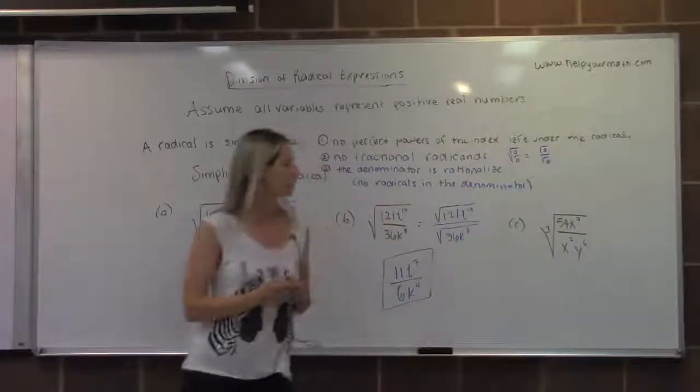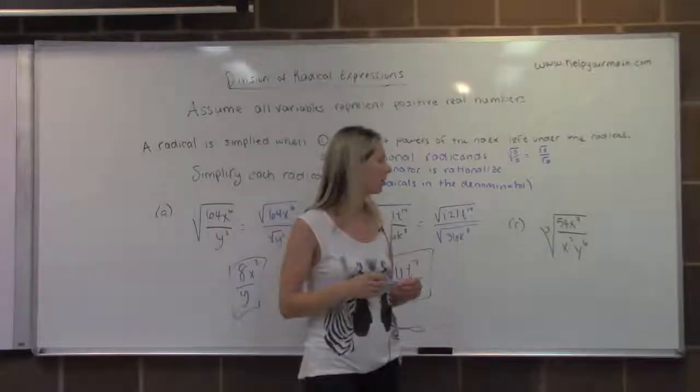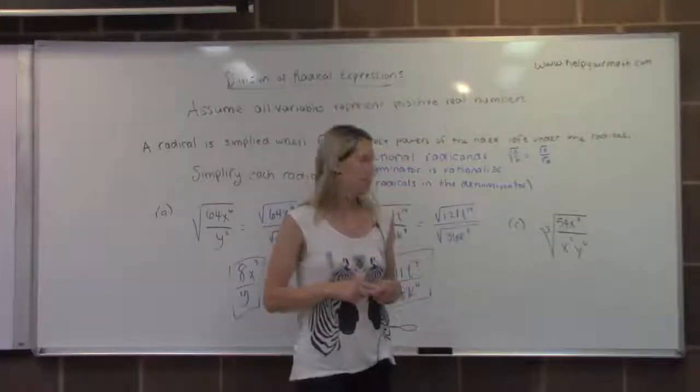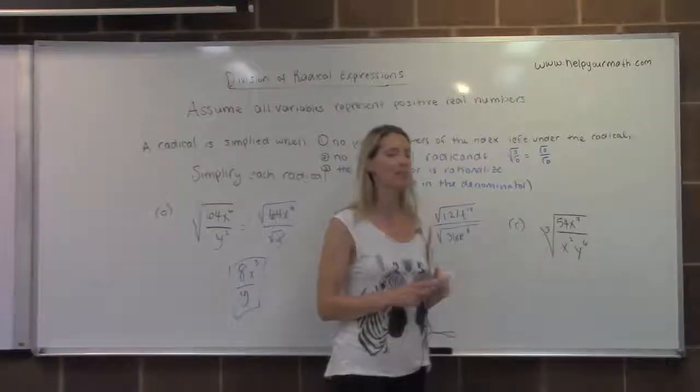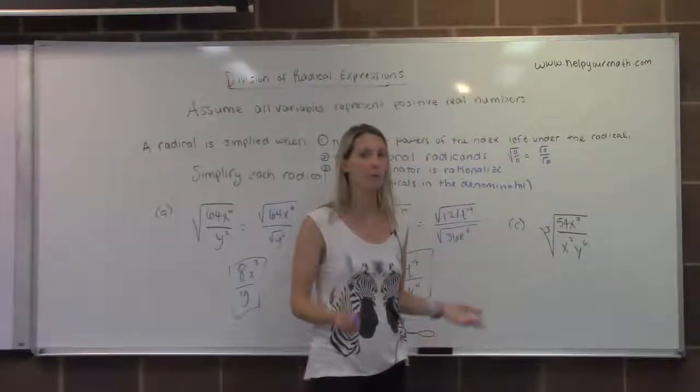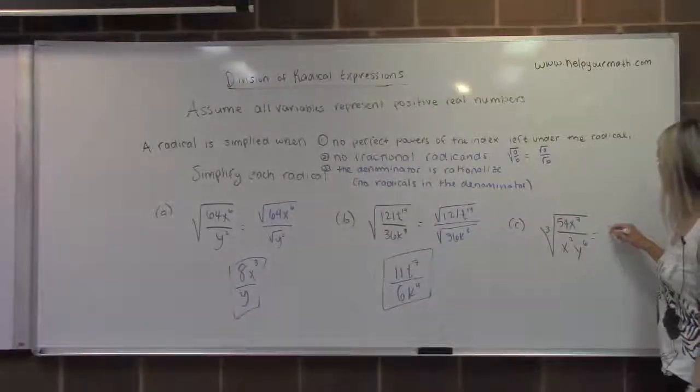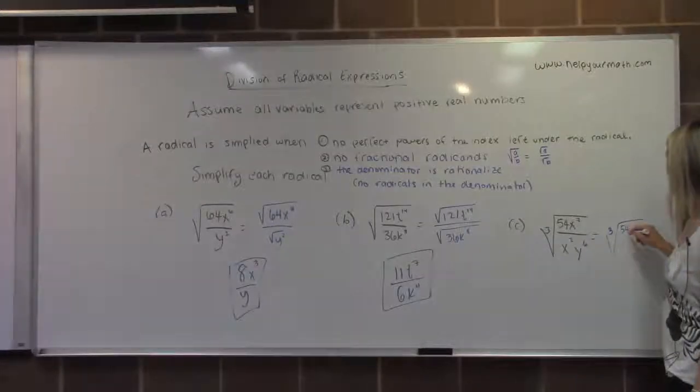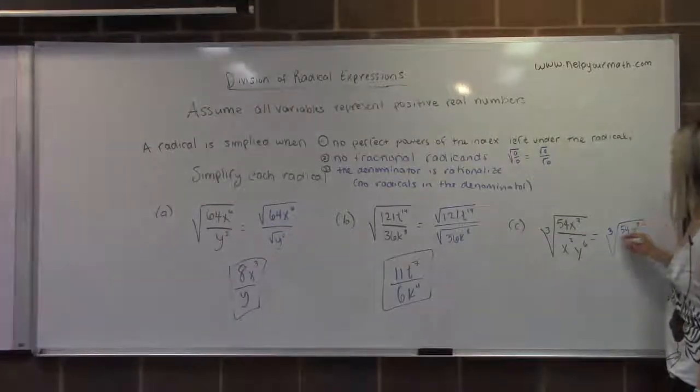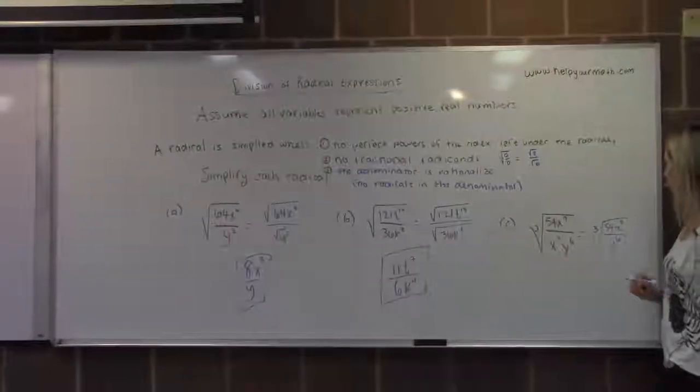Looking at letter c, we have the cube root of 54x to the seventh over x squared times y to the sixth. The first thing I notice is that both the numerator and the denominator have a factor of x, so I want to simplify that first. There are seven factors of x in the numerator and two in the denominator, indicating five factors more in the numerator. So we would have x to the fifth in the numerator over y to the sixth.